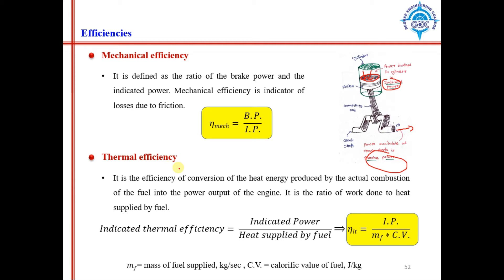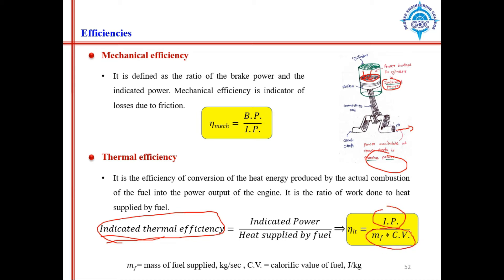Next is thermal efficiency, which has two types: indicated thermal efficiency and brake thermal efficiency. Indicated thermal efficiency measures how much indicated power is generated from the thermal energy of fuel. The output is indicated power and the input is heat supplied by fuel. Heat supplied by fuel equals Mf × CV, where Mf is the mass of fuel in kg/s and CV is the calorific value of fuel.